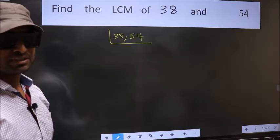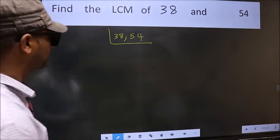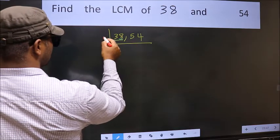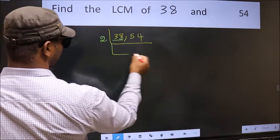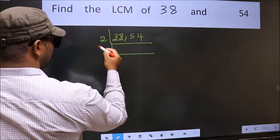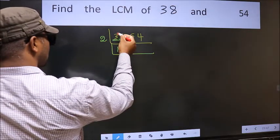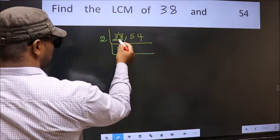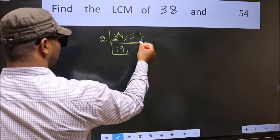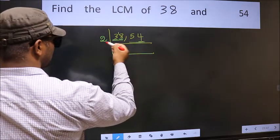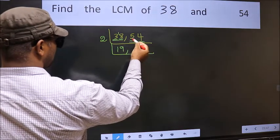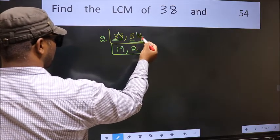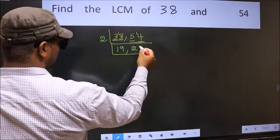Now focus on the first number, 38. The last digit is 8, which is even, so take 2. The first digit is 3; a number close to 3 in the 2 table is 2. 3 minus 2 is 1, carried forward gives 18. 2 nines are 18, so 38 divided by 2 gives 19. The other number 54: last digit 4 is even, so divisible by 2. First digit 5; close number in 2 table is 4. 5 minus 4 is 1, carried forward gives 14. 2 sevens are 14, so 54 divided by 2 gives 27.